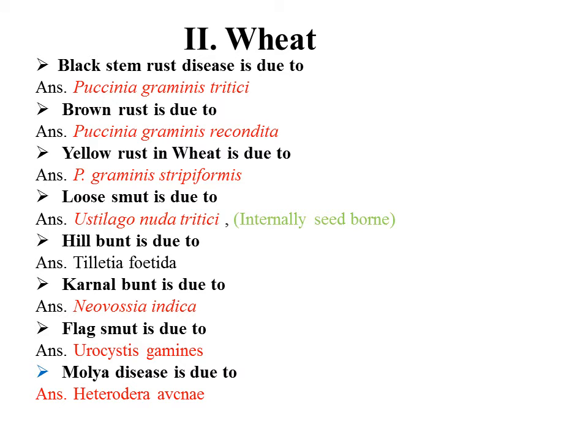Coming to wheat: black stem rust is caused by Puccinia graminis tritici. Brown rust is due to Puccinia graminis recondita. Yellow rust of wheat is also due to Puccinia graminis tritici. These are the major rust and smut diseases of wheat.